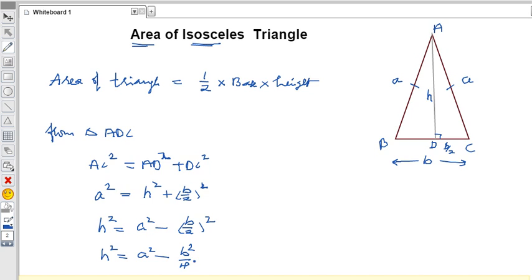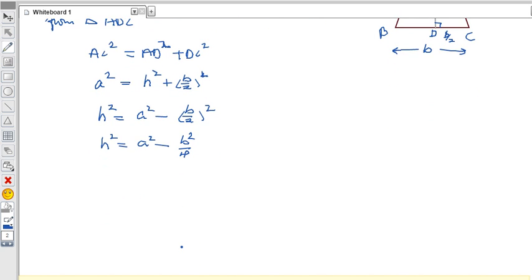Let us take LCM and simplify: h² = (4a² - b²)/4. To find h, apply square root on both sides: h = √[(4a² - b²)/4]. If you simplify this, h = √(4a² - b²)/2.